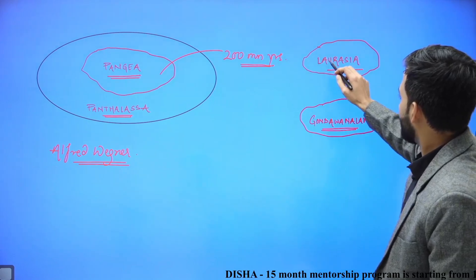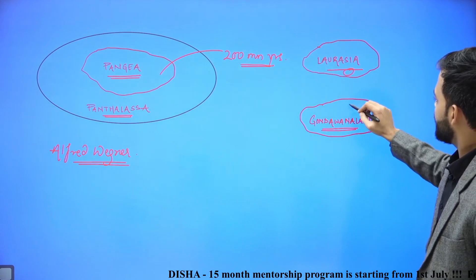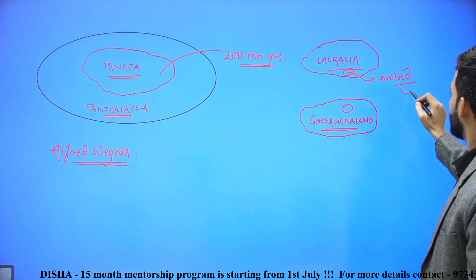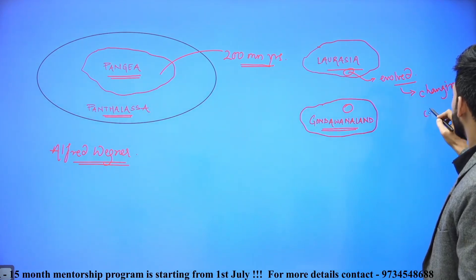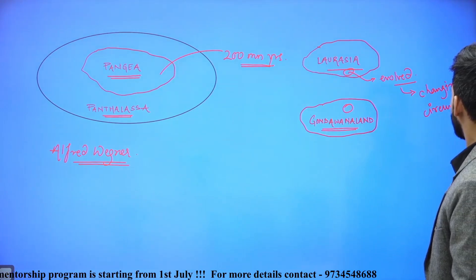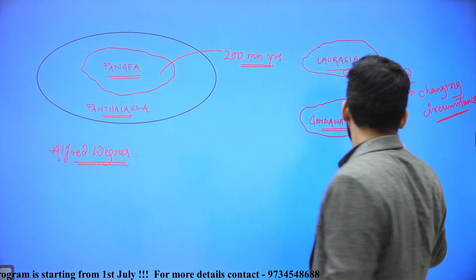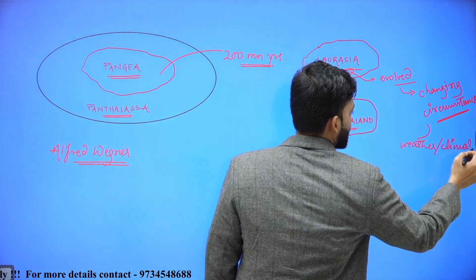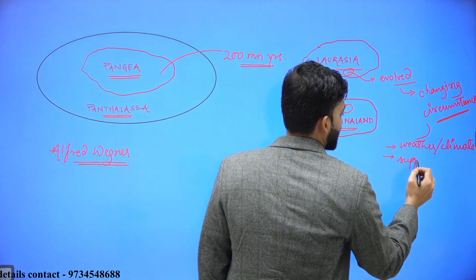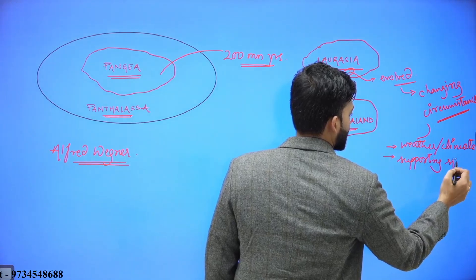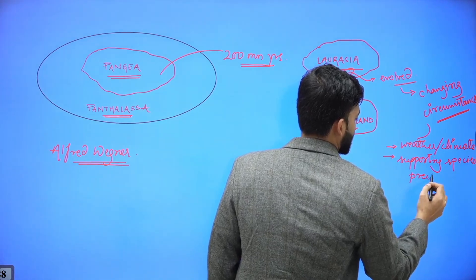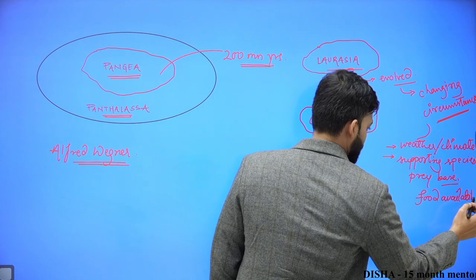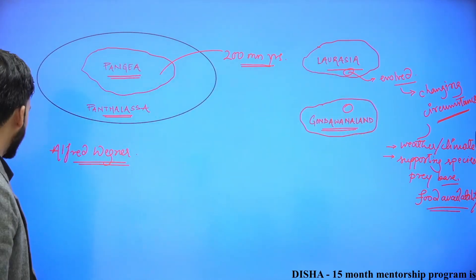Now when this breaking of continents occurred, the species present in these continents evolved because of the changing circumstances — like weather, climate, supporting species like prey base, or food availability. So definitely, continental drift helped in the evolution of organisms.